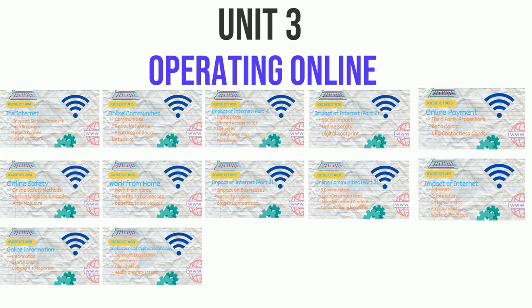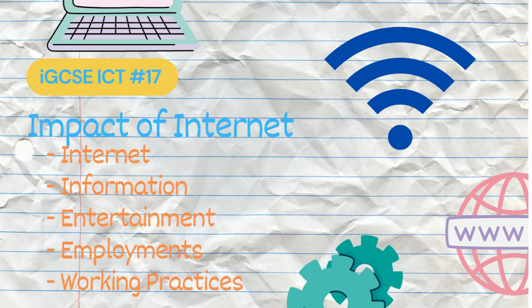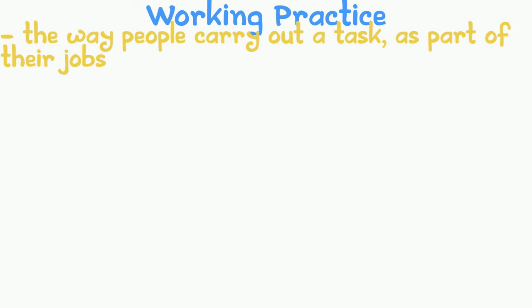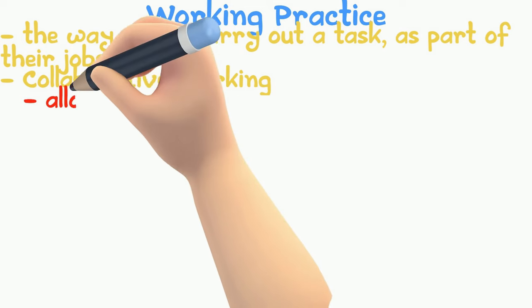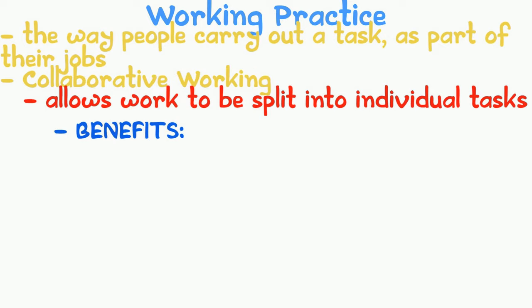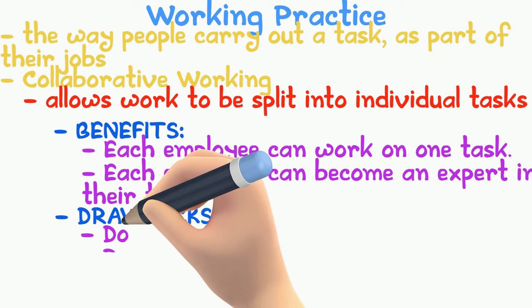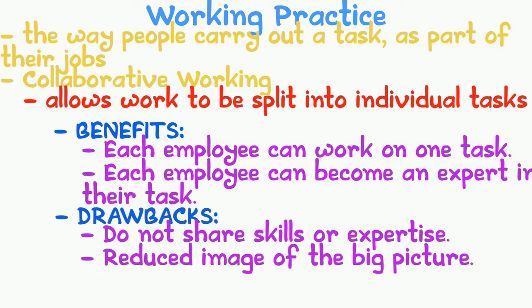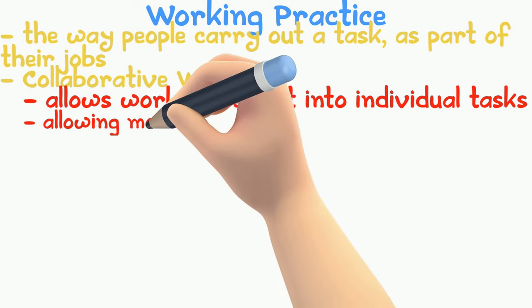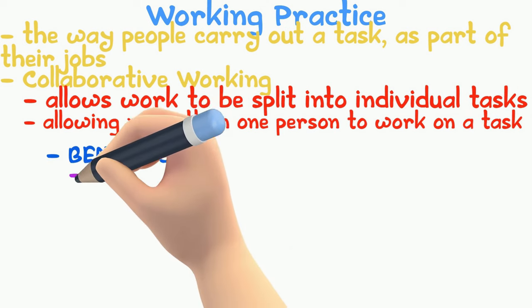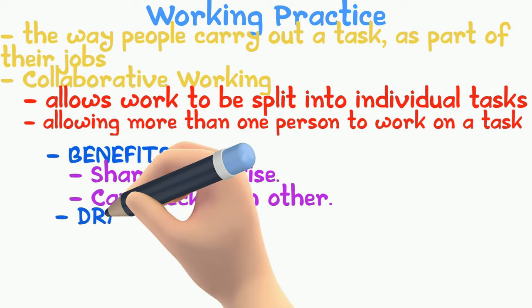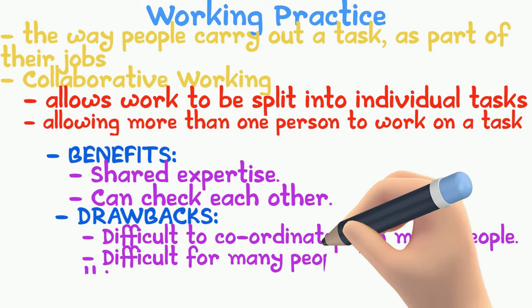Another request was for working practices affected by the internet. Working practices are the way people carry out tasks as part of their job. The internet has had two main changes: collaborative working, which allows work to be split into individual tasks. Benefits include employees becoming experts in their task, but drawbacks include not sharing skills and a reduced view of the big picture. Collaborative working can also allow multiple people on one task — benefits include shared expertise, but drawbacks include difficulty coordinating and agreeing.